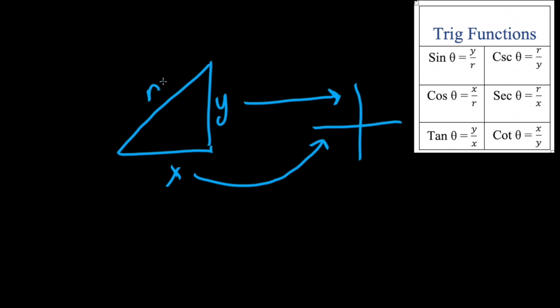These three functions all have reciprocal functions, which means they're opposites. So the cosecant of an unknown angle, which is the reciprocal of sine, will be found by the value of r divided by y.